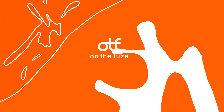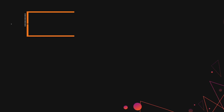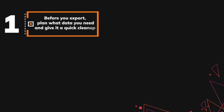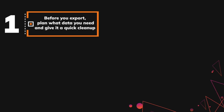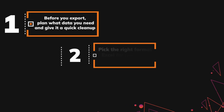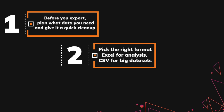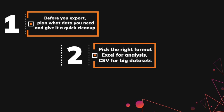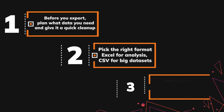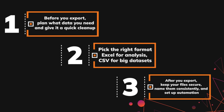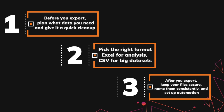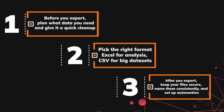That brings us to our biggest takeaways. Before you export from HubSpot, always plan what data you need and give it a quick cleanup so you're not fixing mistakes later. Then pick the right format: Excel for analysis, CSV for big data sets, and know the limits so nothing gets cut off. After you export, keep your files secure, name them consistently so you don't lose them, and if you're running reports regularly, set up automation to save yourself time.